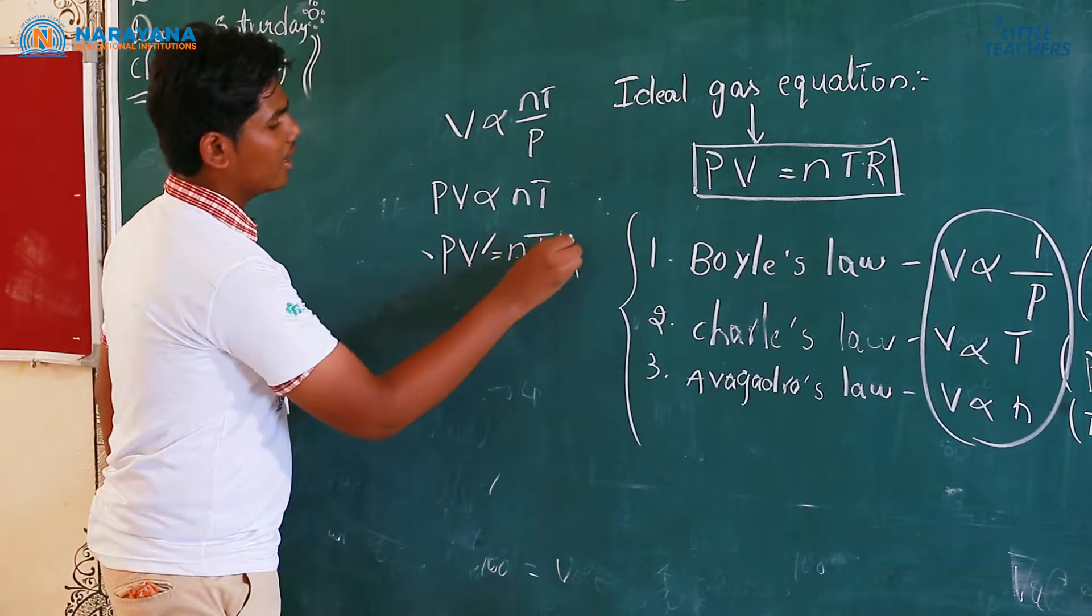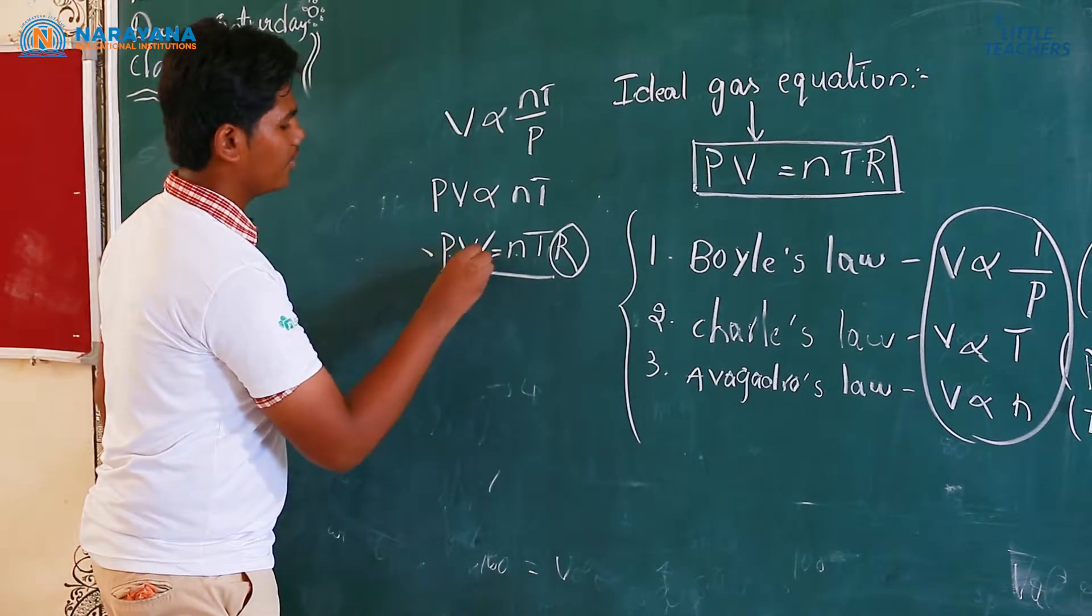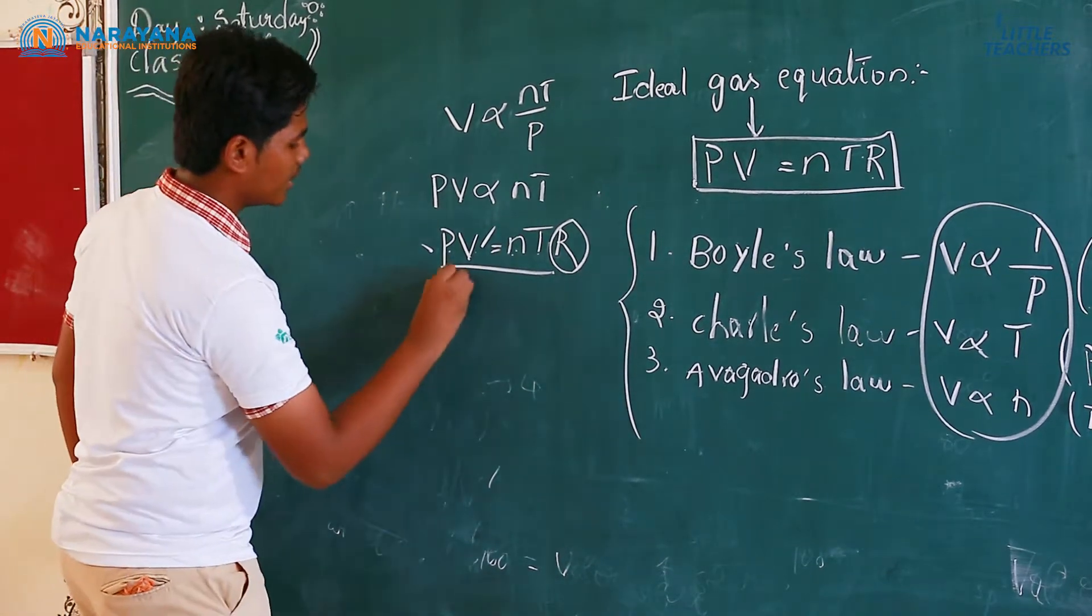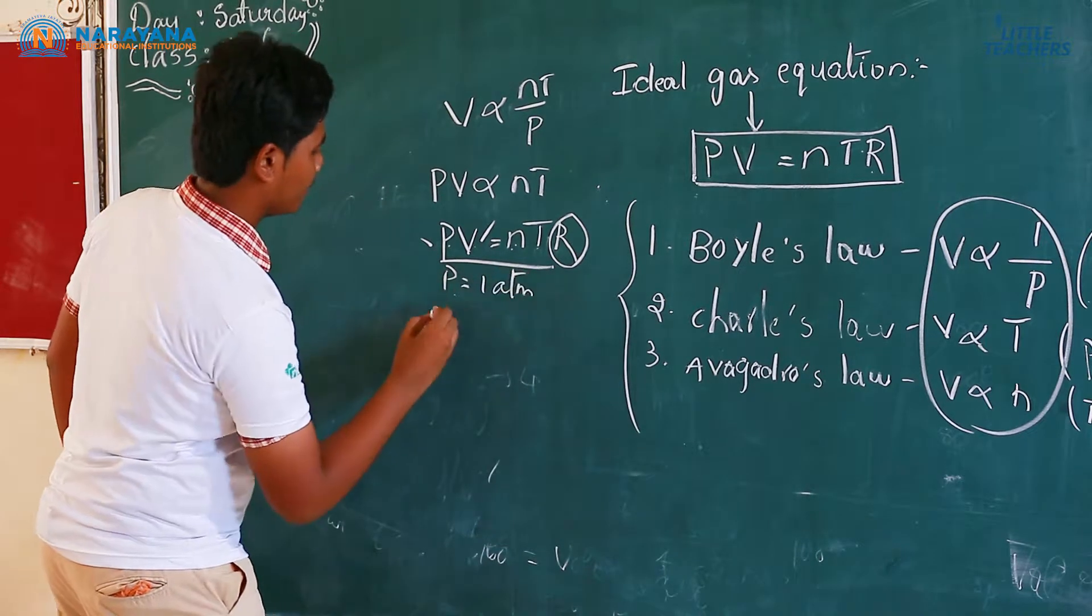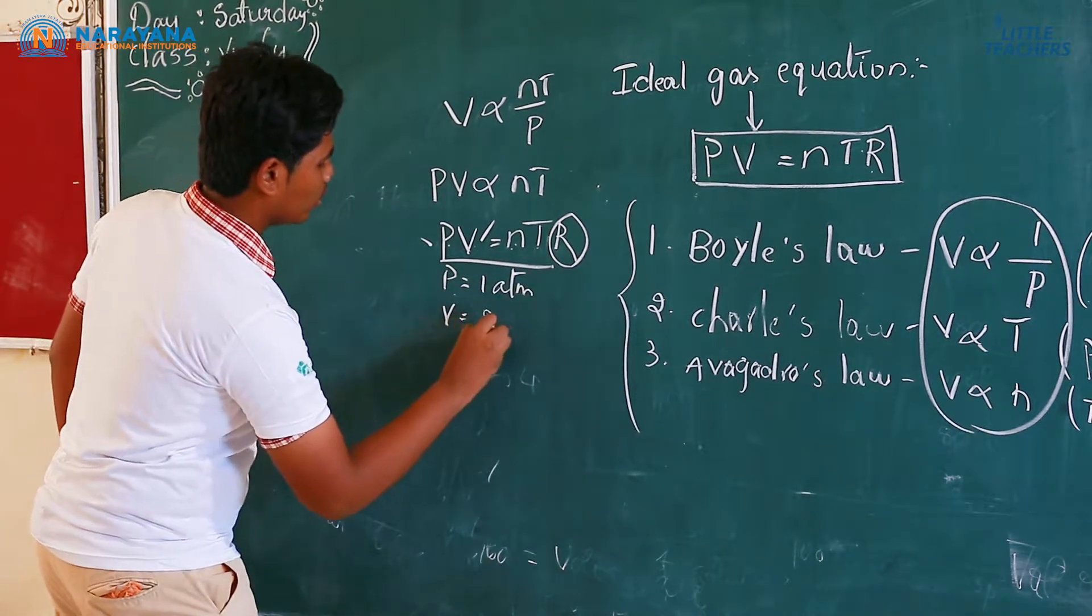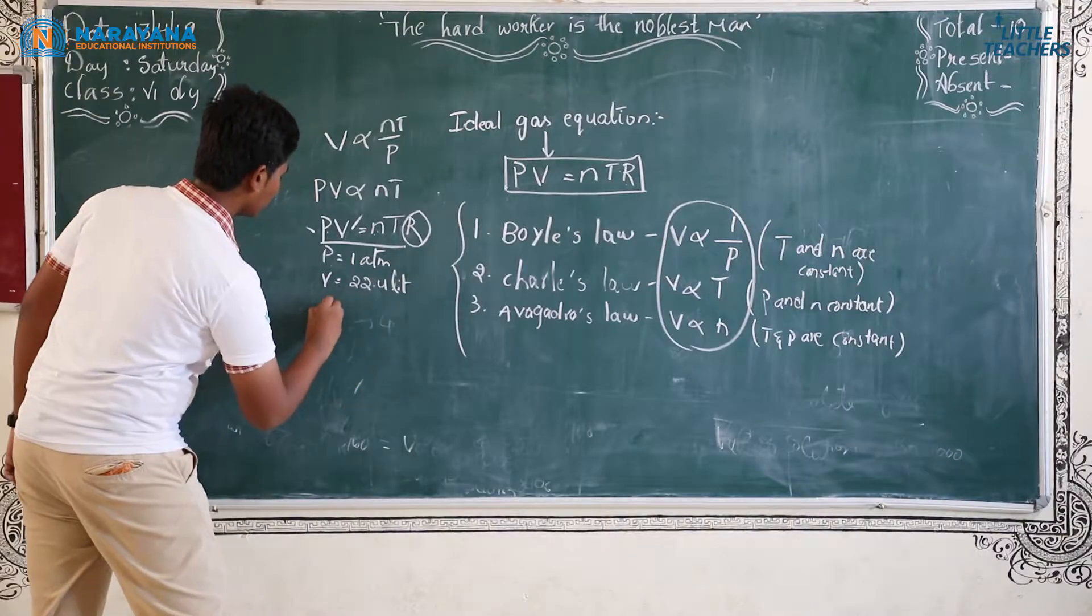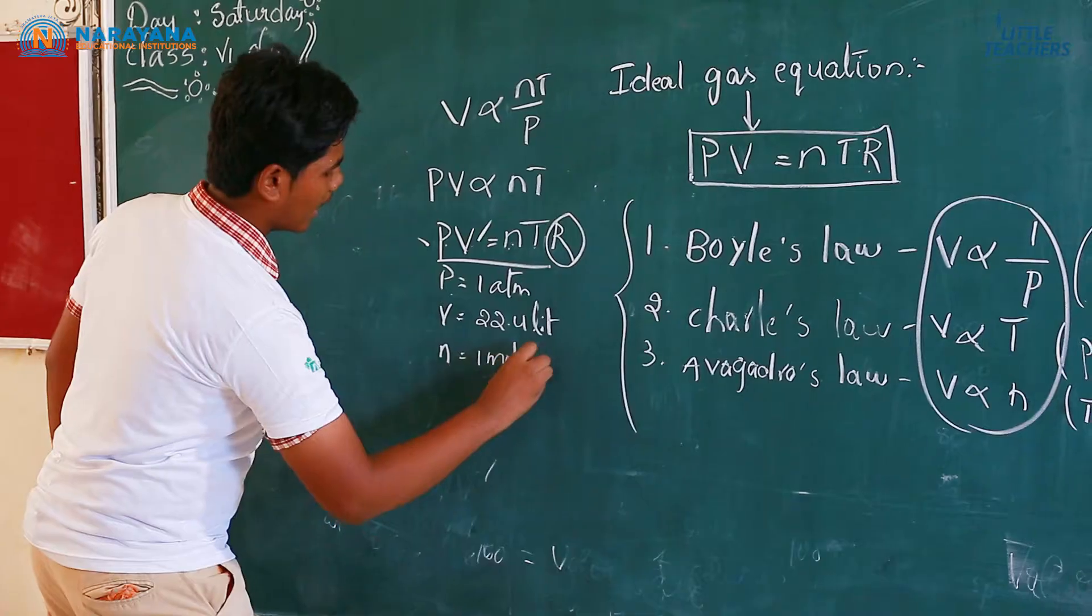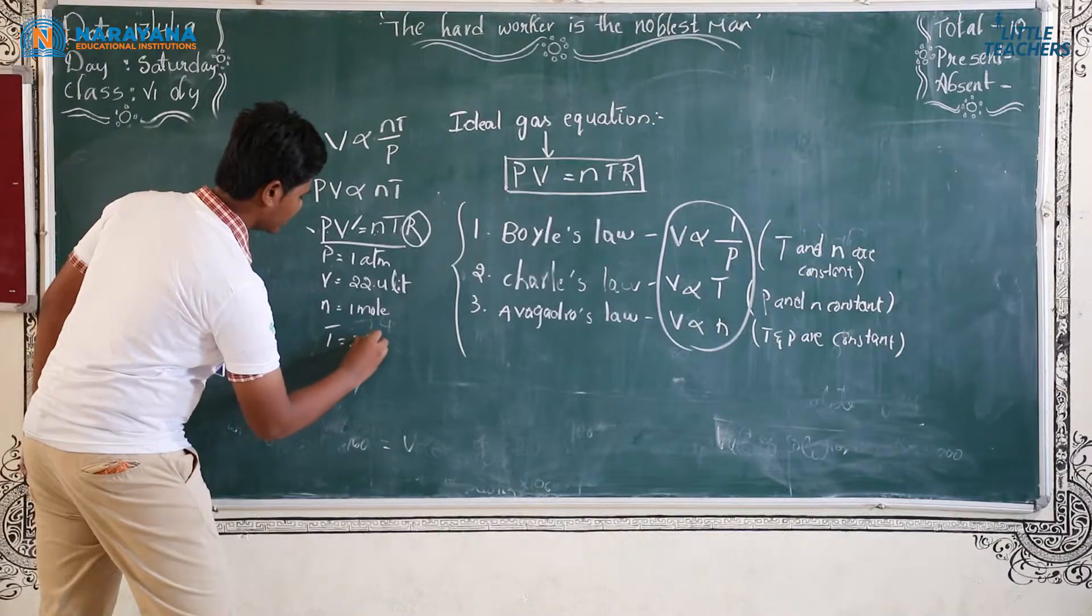Next, to calculate the value of R, we should know the values of P, V, N and T. At STP conditions, P is equals to 1 atmosphere. V is equals to 22.4 liters. Number of moles, N is equals to 1 mole. Absolute temperature, T is equals to 273 Kelvin.